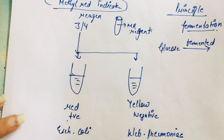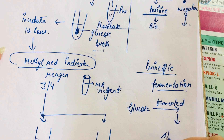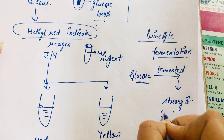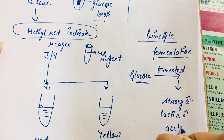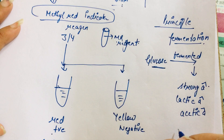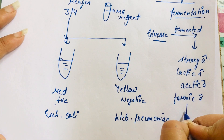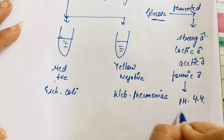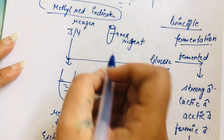Some bacteria, such as E. coli, have the ability to ferment glucose into strong acids such as lactic acid, acetic acid, and formic acid. These strong acids maintain the pH of the phosphate glucose broth at 4.4 or below. When we then add the MR reagent to this acidic medium, a color change occurs.